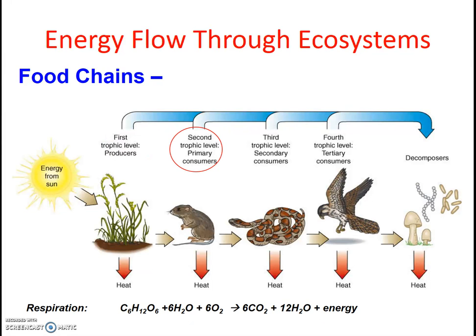The second trophic level is called the primary consumers. These are the organisms that get their energy from eating plants — sometimes we call them herbivores. Thus, the solar energy that the plants stored as sugar is now used by animals. Notably, when animals or plants use that stored energy, the process is called respiration, which is simply the reverse of photosynthesis, and thus it yields energy. Animals, like us, need sugar, oxygen, and water to provide us with energy, and water and CO₂ are waste products.